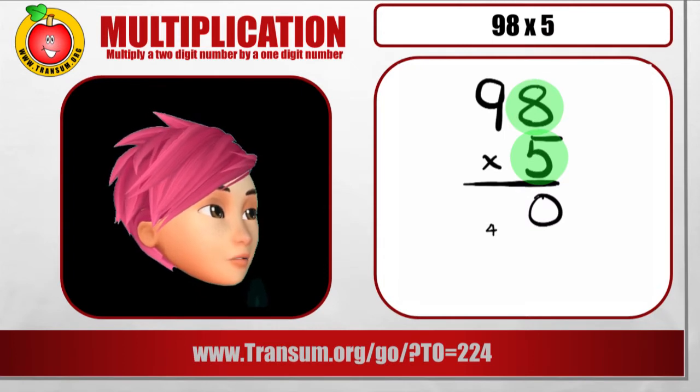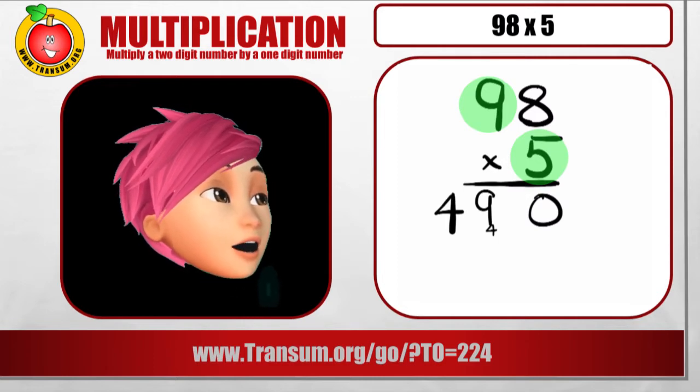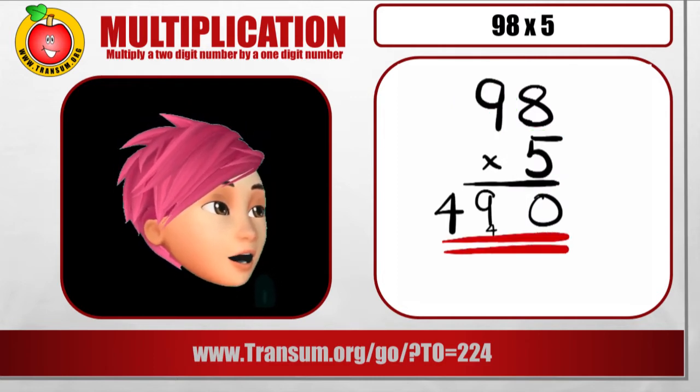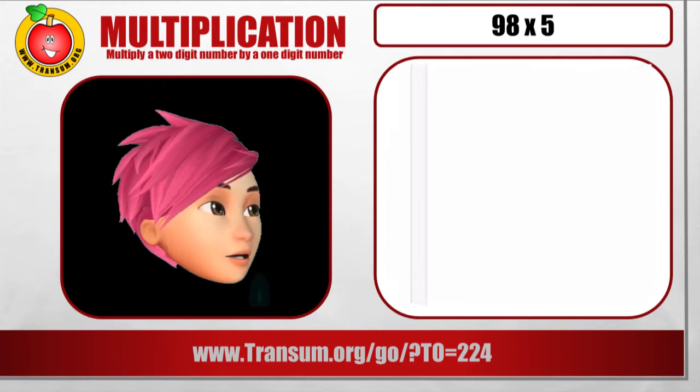So you write down the 0 in the 1's column and carry the 4 into the 10's column. Then 5 times 9 is 45. Add on the 4 and that makes 49. So 490 is the answer.